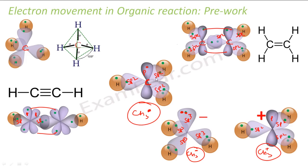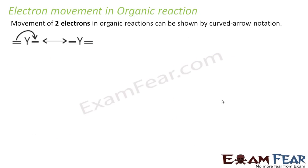So the concept here is: CH3 plus will have zero electrons in that orbital; CH3 free radical will have one electron in the p orbital; and CH3 minus will have two electrons in the sp3 orbital. Zero electron, one electron, two electrons — CH3 plus, CH3 radical, and CH3 minus. This is the basic concept before we understand electron movement in an organic reaction.